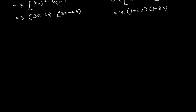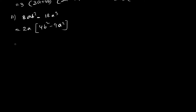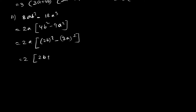Question 11 is 8ab² - 18a³. We take 2a common, leaving 4b² - 9a², which is a difference of two square numbers. Further factorization gives 2a(2b + 3a)(2b - 3a).